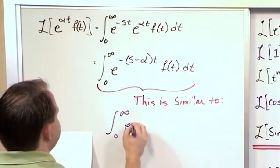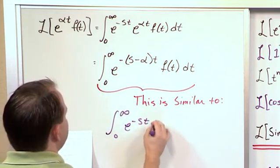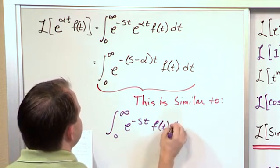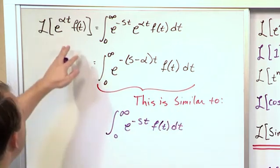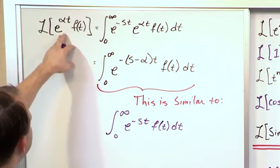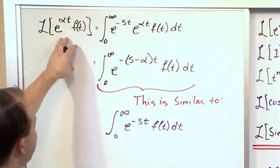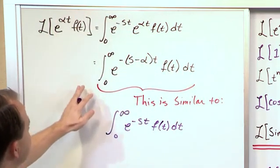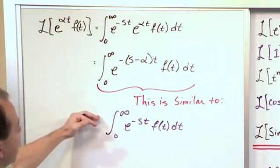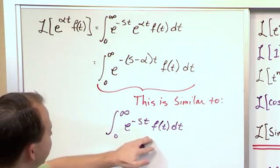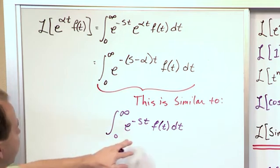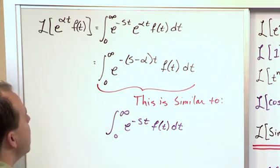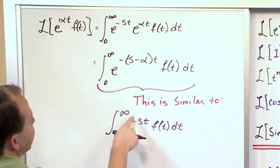Integral zero to infinity e to the minus s t f of t dt. In other words, if we have a function multiplied by some exponential and we do the simplification, then it really just looks like the Laplace transform integral. This is the Laplace transform integral, if we were just transforming f of t. But the difference is, notice there's a minus sign in here.